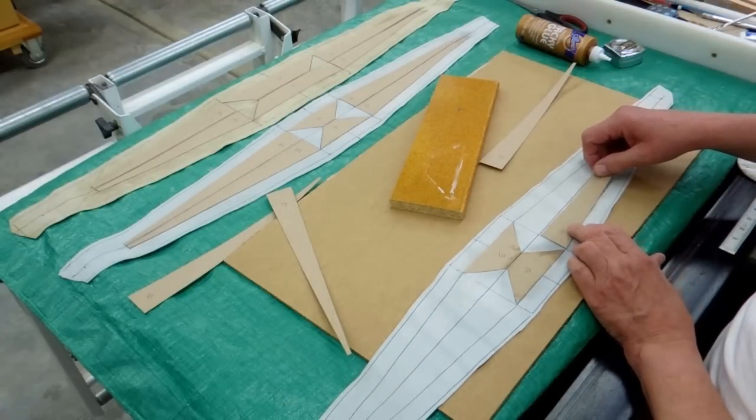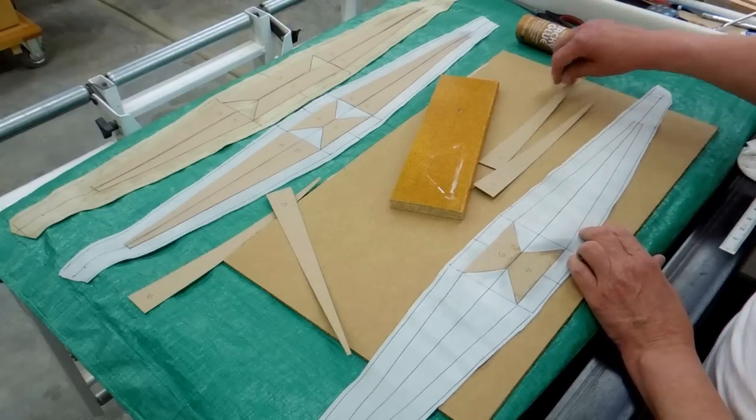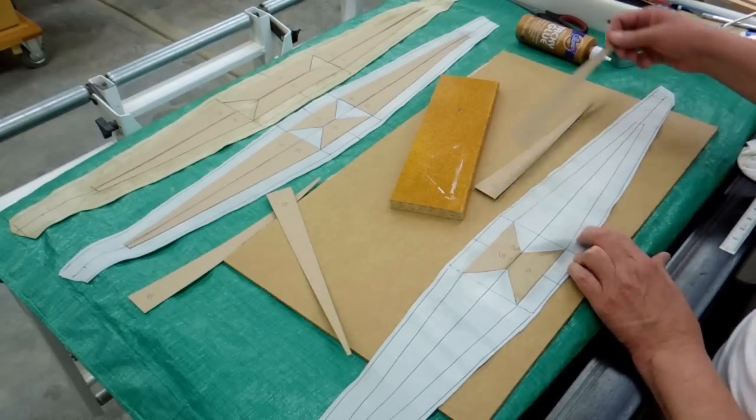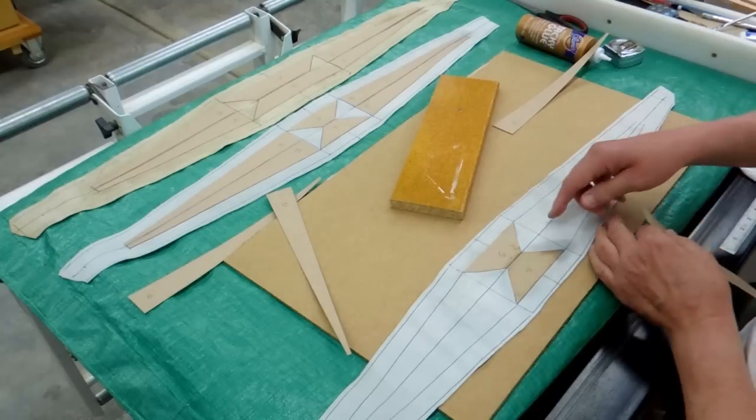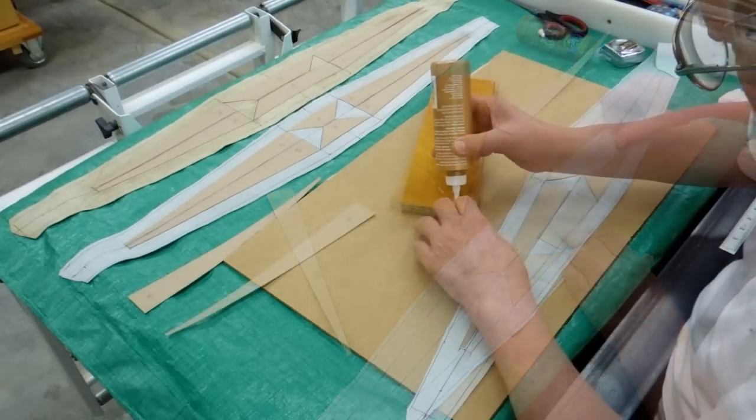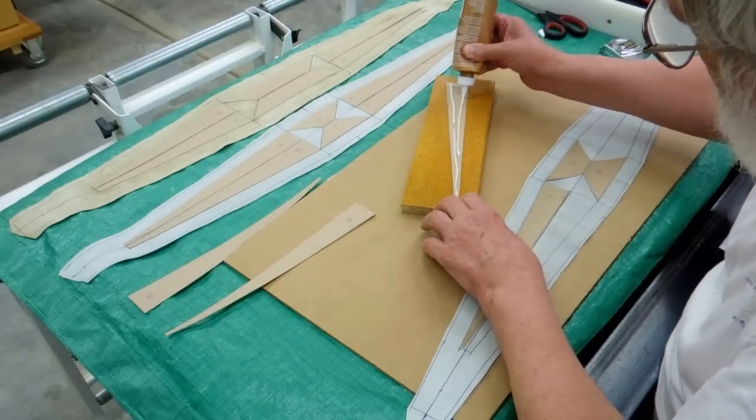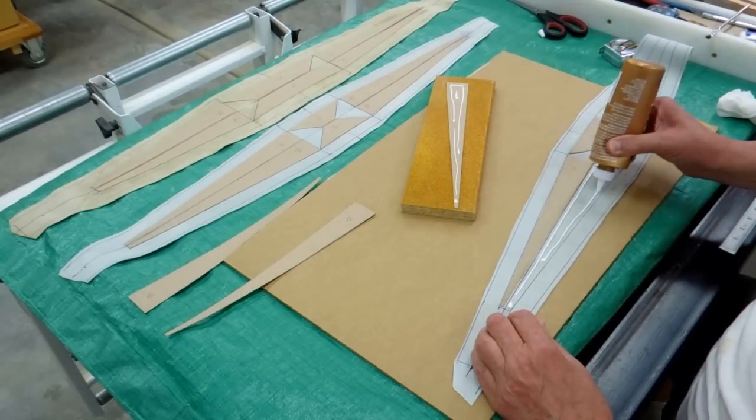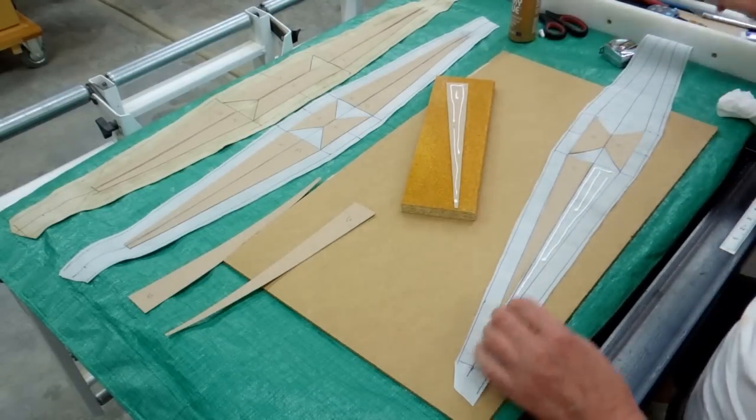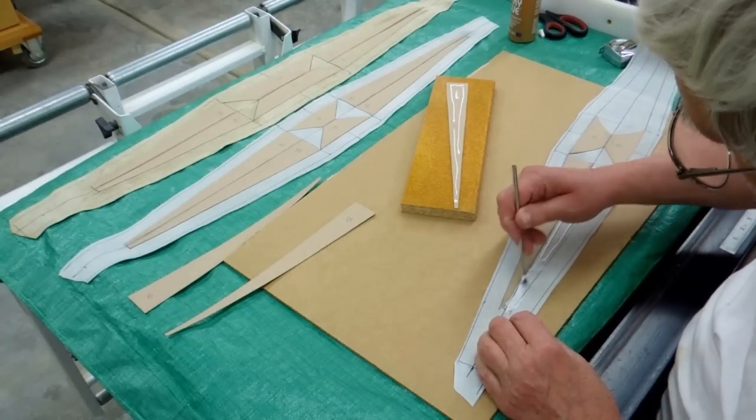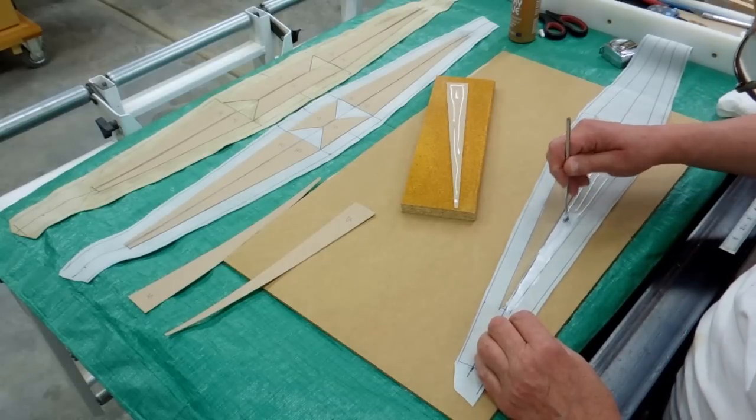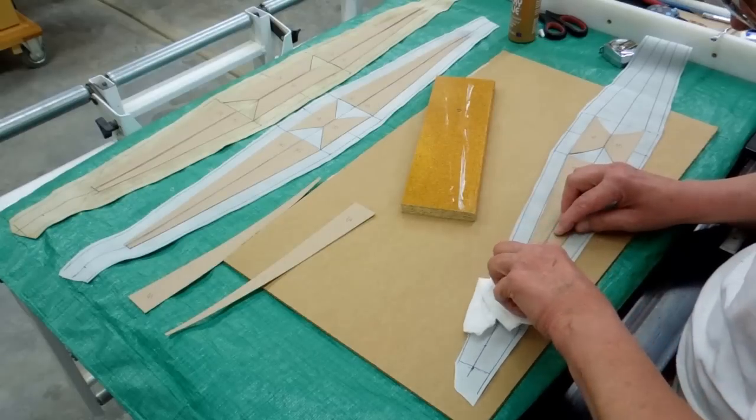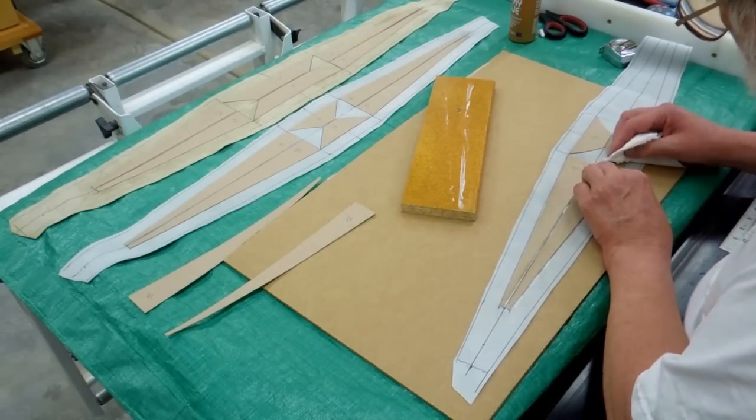When you get ready to put these other pieces on, you've got to make sure you pick up the right piece. If you pick up the wrong piece and try to put it on there, it's going to angle down here in the wrong direction. This is a right angle, that's a right angle, so that's the piece we want right there.